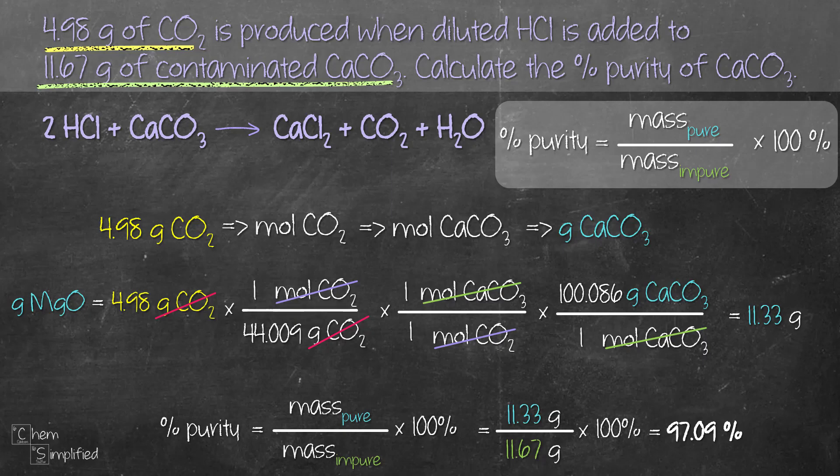in order to calculate the percent purity, we need to first start off with a balanced equation and then after that we convert from the given information to find the mass of the pure sample and then we plug it into the percent purity formula and we're done.